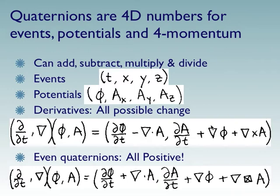You can add, subtract, multiply, and divide them like you would any other number. We're most familiar with real numbers, but physicists are certainly familiar with complex numbers, which have one real number and one imaginary number. Quaternions have one real number and three imaginary numbers.